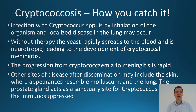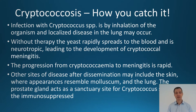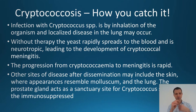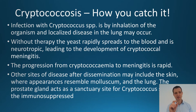Without any kind of treatment, the yeast will rapidly spread from the lungs into the blood. It's a very neurotropic fungus, meaning it seeks out the nervous system, and you will eventually develop cryptococcal meningitis — it's effectively only a matter of time. The progression from blood to brain can be quite rapid. Other sites that can be affected include the skin. The skin lesions resemble molluscum contagiosum — small lesions with a dip in the middle.